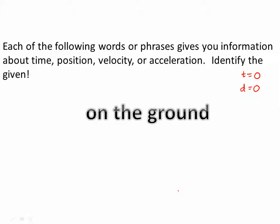On the ground. 'On the ground' is usually used when we're throwing things up in the air, which means that the ground is considered the origin. And so as it goes up in the air and comes back down, distance equals zero — the displacement equals zero when it's on the ground.